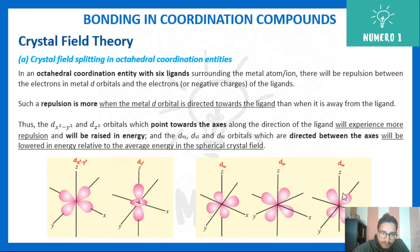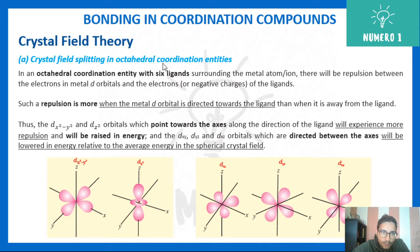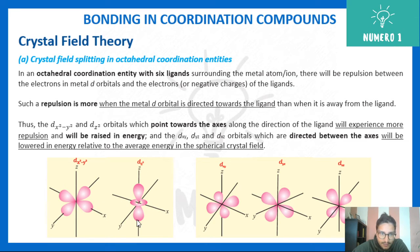In an octahedral coordination entity with coordination number six, there will be repulsion between electrons in the metal d orbitals and the electrons or negative charges of the ligands. In octahedral geometry, the ligands approach along the x, y, and z axes. The repulsion will be greater for d orbitals directed towards the ligands — dx²-y² and dz² — which point along the direction of the ligands.